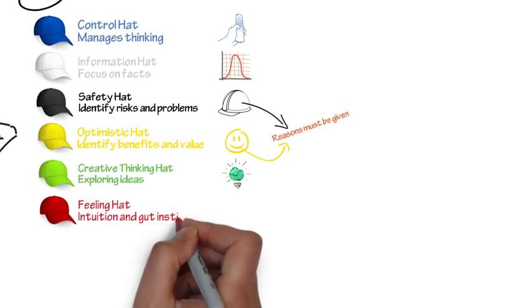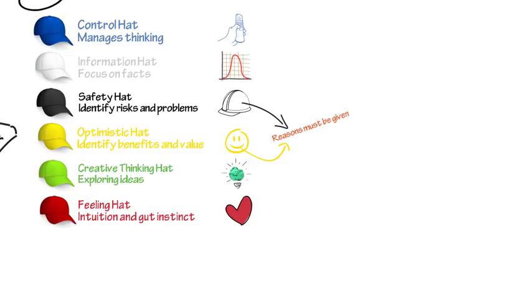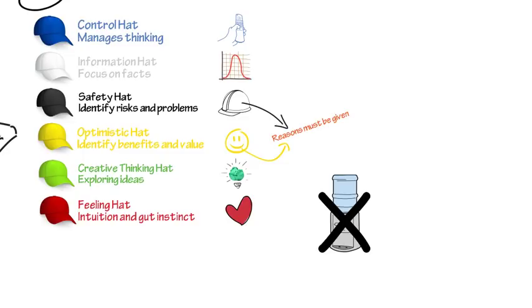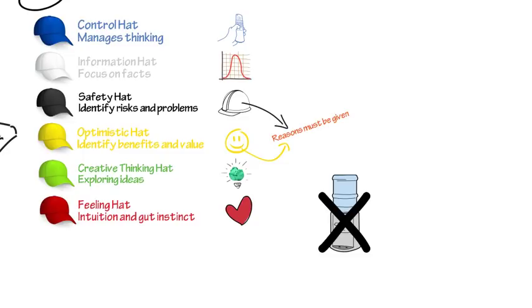The red hat gives us permission to express feelings as they are right now, and it helps to stop those what-I-really-think type conversations that can so often happen after meetings that then derail much of the good work that was achieved. Our gut instincts are also a key ingredient in our decision-making, so don't underestimate the importance of this hat, but keep the time that you wear it short.